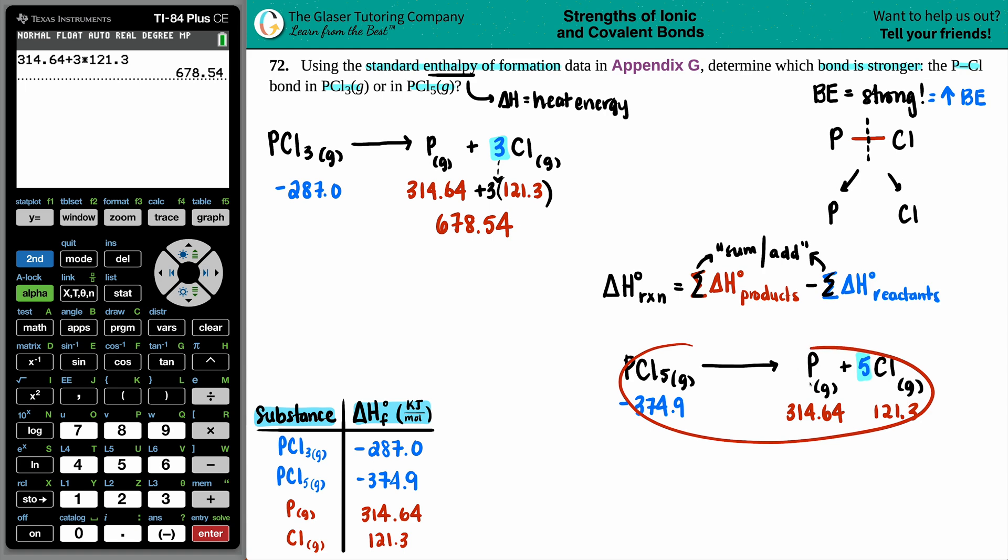Now let's do the same for PCl5. You only got one of them, so it's left alone. You got one phosphorus, so that's all good. But now you got five chlorines. We have to sum up the products because there's a plus sign here, but I have to take the 121.3 and times it by five.